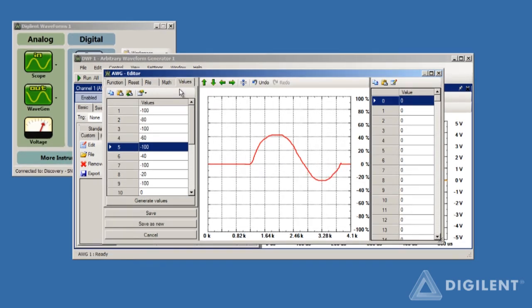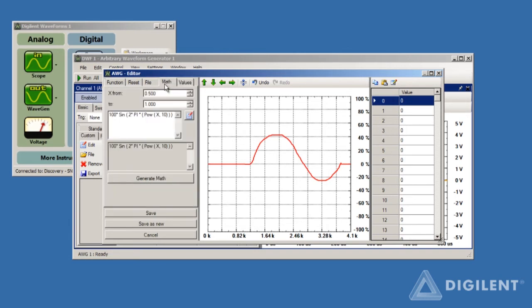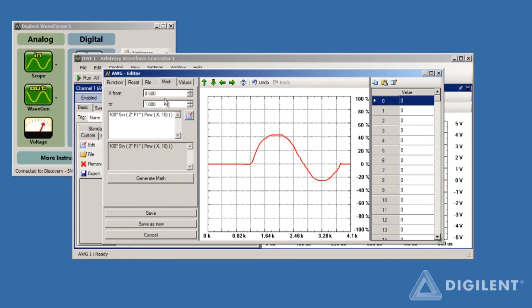For this project, we want to create a signal from a mathematical formula. To do this, click on the Math tab. In the Math tab, you provide a mathematical representation of the signal along with a range on the x-axis or time axis over which the signal is defined.